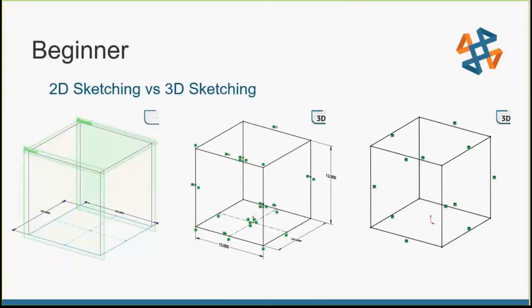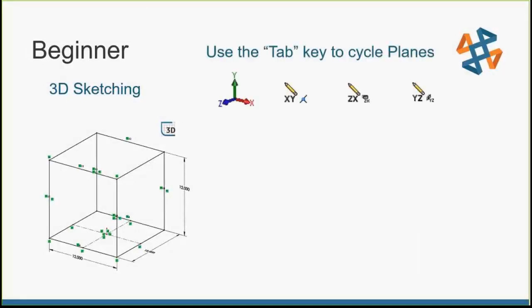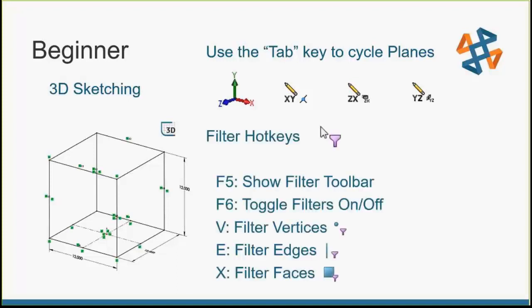To recap 2D versus 3D sketching: use the Tab key to cycle planes in a 3D sketch, and look at that mouse feedback to know where you're sketching. It's easy to get turned around since you have all axes at your disposal, but once you get the hang of it, containing all your information in one 3D sketch is much easier. Also: if you ever see that pink funnel, hit F5 to see which filters are on, and F6 to toggle them. The E key or V key — near your spacebar — are commonly hit by accident, turning on that filter. Just hit F6 to clear those out.